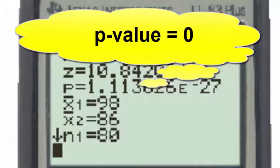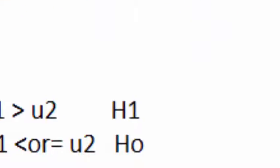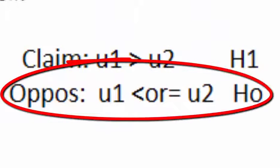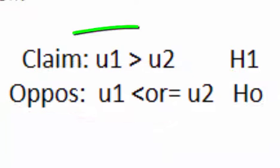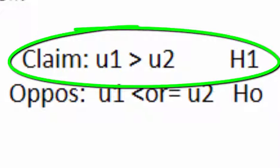Using the p-value rule, if p-value is less than alpha, we reject the null hypothesis. In our case, the null hypothesis happens to be the opposite of the claim. Therefore, by rejecting the null hypothesis, we will be supporting the alternative hypothesis, and therefore supporting the researcher's claim.